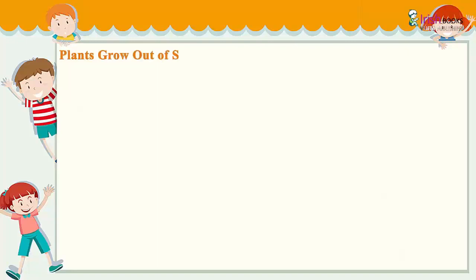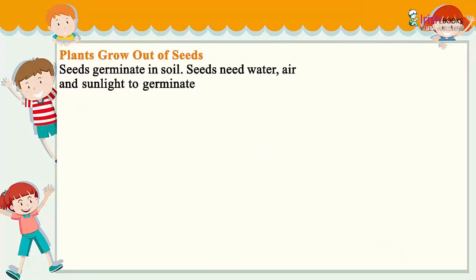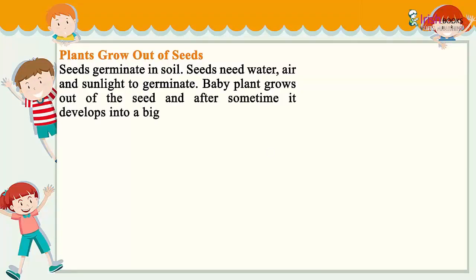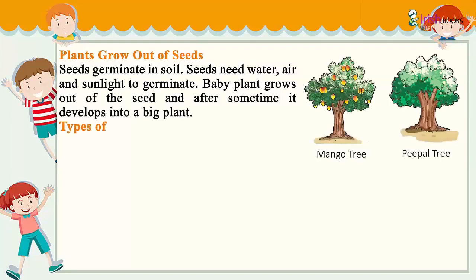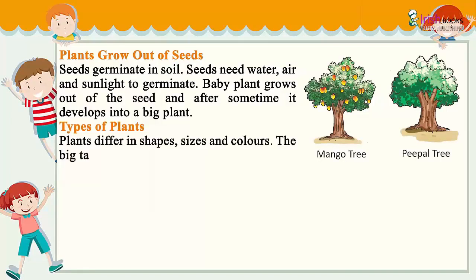Plants grow out of seeds. Seeds germinate in soil. Seeds need water, air, and sunlight to germinate. A baby plant grows out of the seed, and after some time it develops into a big plant.